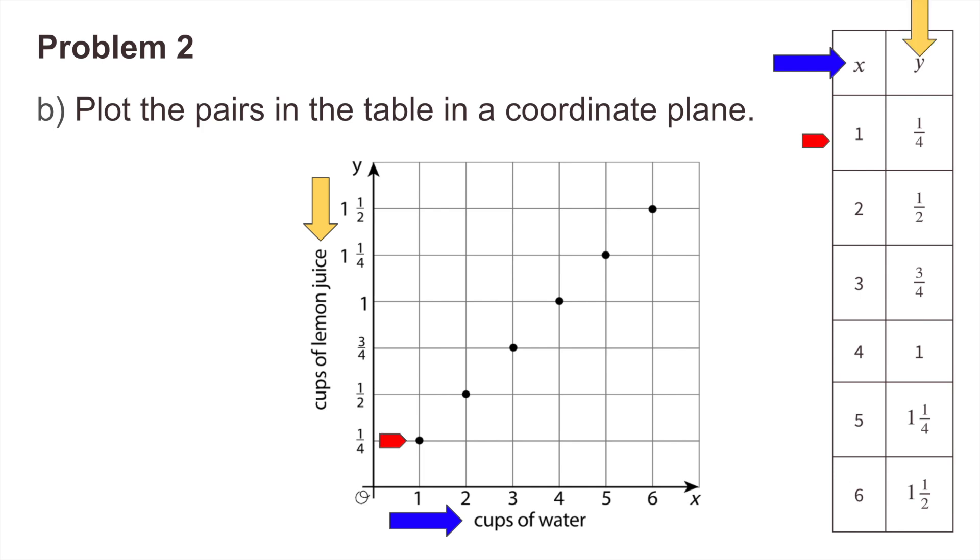One cup of water, one-fourth cup of lemon juice. Two cups of water, one-half cup of lemon juice. Three cups of water, three-fourths cup of lemon juice. Four cups of water, one cup of lemon juice. Five cups of water, one and one-fourth cups of lemon juice. Six cups of water, one and one-half cups of lemon juice.